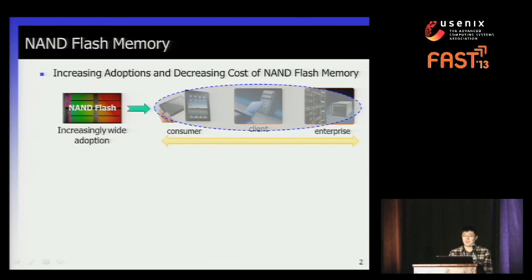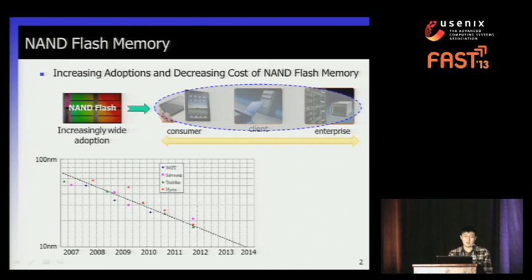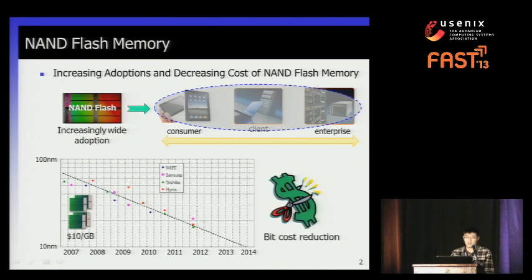In recent years, NAND flash memory is adopted in an increasingly wide range, from consumer electronics to enterprise applications. One reason for this is decreasing bit cost. As the technology has scaled from 100 nanometers to sub-20 nanometers, the cost per gigabyte of NAND flash memory has decreased from $10 in 2007 to $1 in 2010, and even to tens of cents recently.